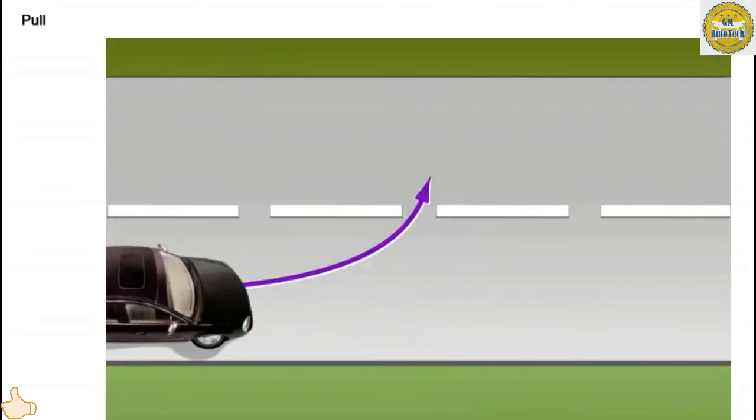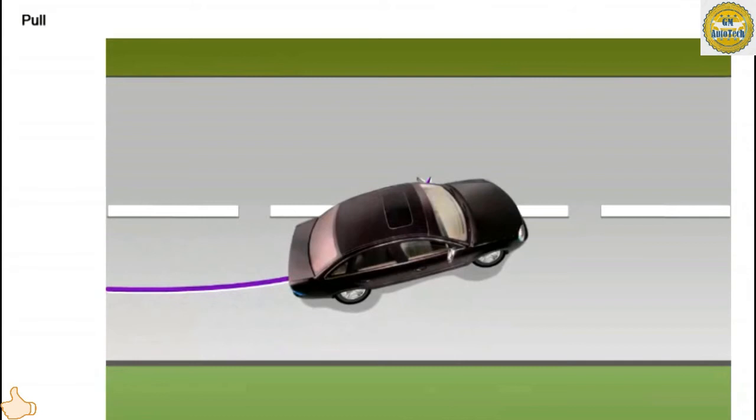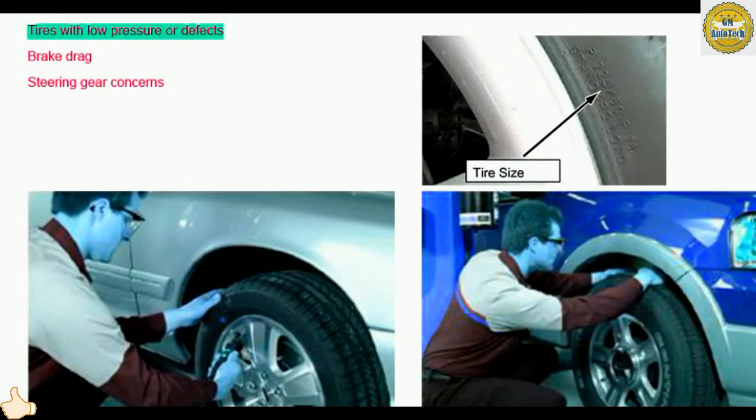Pull is like drift, but much stronger. Vehicle pull is felt in the steering wheel. Constant counter-steer in the opposite direction of the pull is needed to make the vehicle travel straight. If you were to release the steering wheel, the vehicle would immediately veer to the side of the pull.